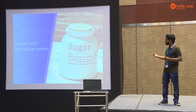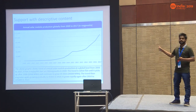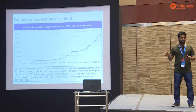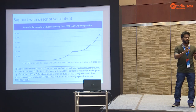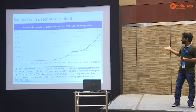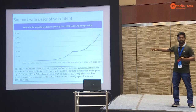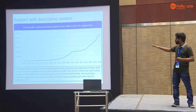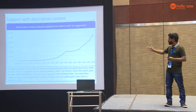The next guideline is to support with descriptive content. This is similar to using alt text for images. Instead of alt text that simply says 'there is a line chart showing annual solar module production from 2017,' actually describe the insight within the chart — talk about how the values are increasing, when they decreased, by how much, and similar points.